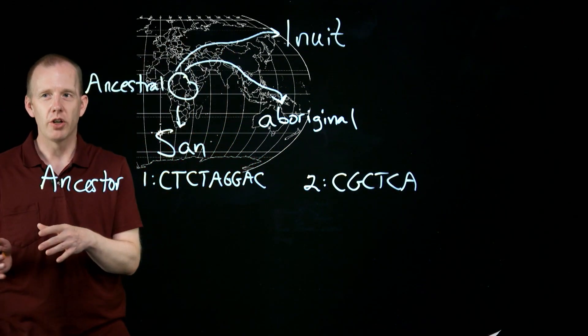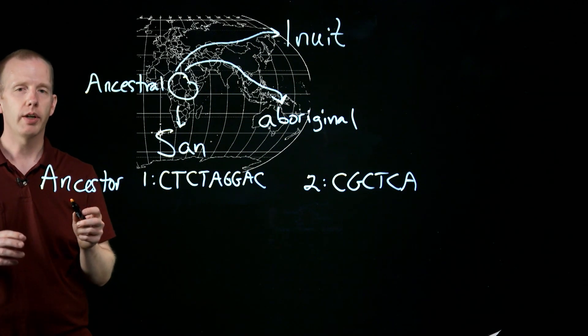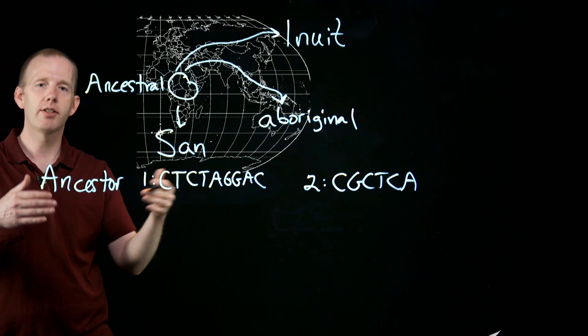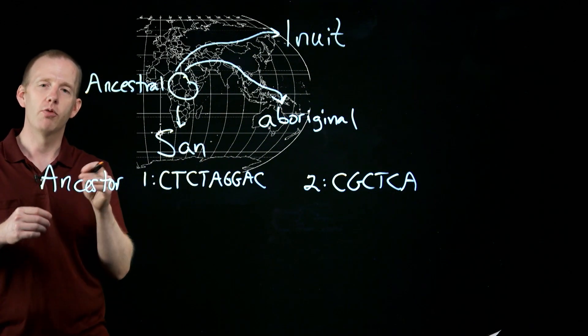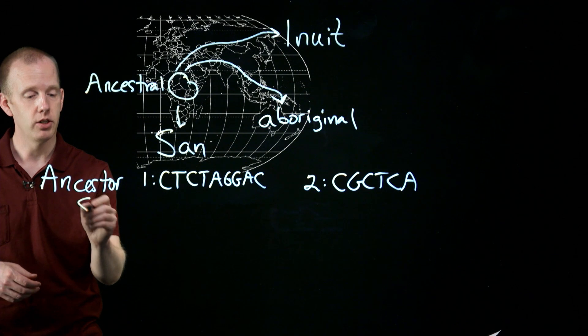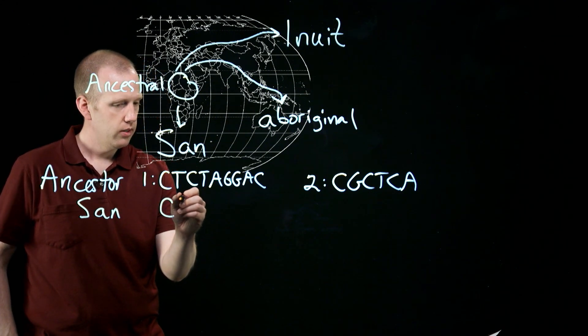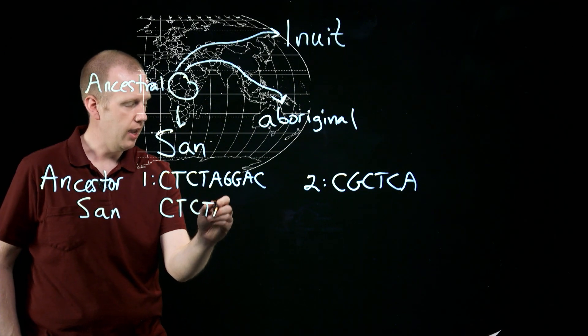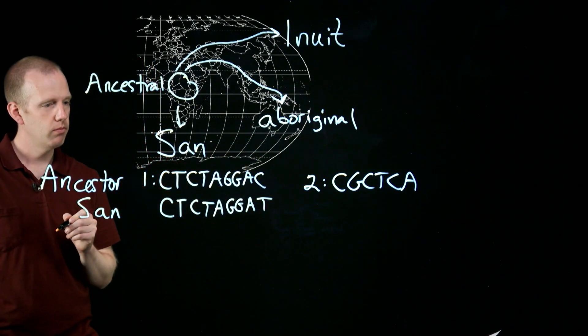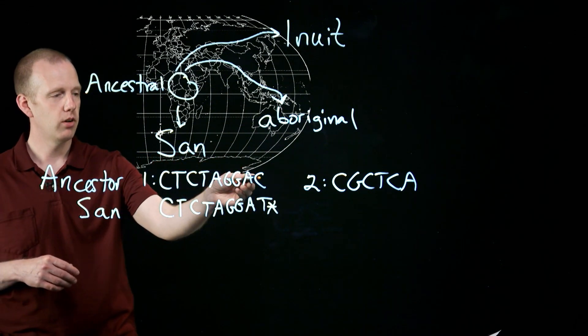So thousands of generations ago when all humans lived in Africa, this might have been the sequence of those parts of the chromosome. Then we can look at, as that chromosome in part of Africa, as those populations grew generation after generation as they moved across the world, every generation random DNA sequence changes, mutations, occur. In the group moving south that are now the modern-day San population, we might have on the same chromosomes in the same regions C-T-C-T-A-G-G-A-T. So it's almost identical but there's one change right there. There was a C in the ancestral population in that part of the chromosome, now there's a T.